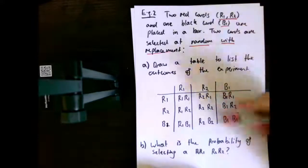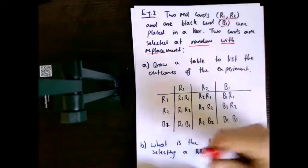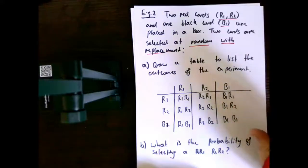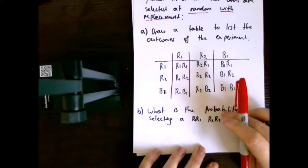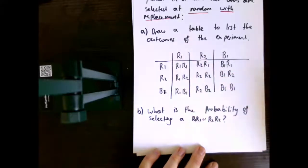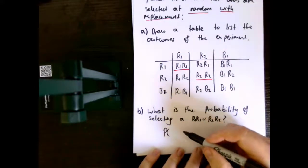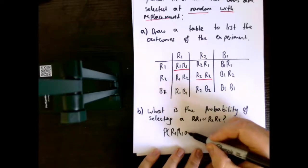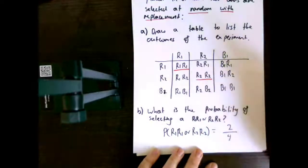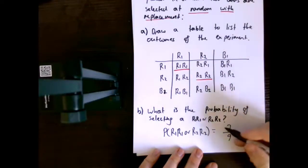Now, how many actual outcomes do we have? They all have equal chance of happening because we've done this with replacement. So we have one, two, three, four, five, six, seven, eight, nine different outcomes. It asks you: what's the probability of selecting red one, red one or red two, red two? I have red one-red one, and I have red two-red two. I have a possibility of nine outcomes to select from. So the probability of red one-red one or red two-red two is equal to two out of nine. That's the advantage of doing things inside a table — it's very easy to identify how many things you have available in your sample space, provided those things have equally likely outcomes.